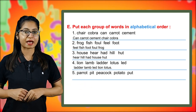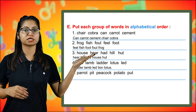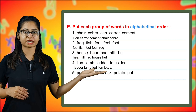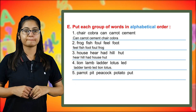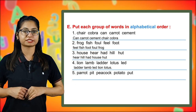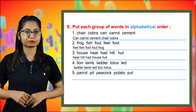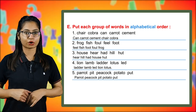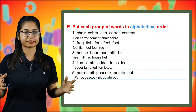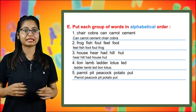The next group is parrot, pit, peacock, potato. Arranged in alphabetical order, the answer would be: parrot, peacock, pit, potato.